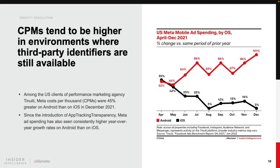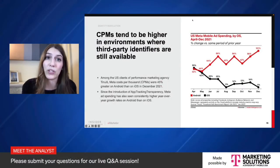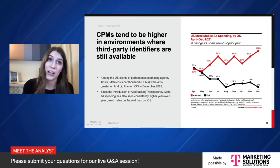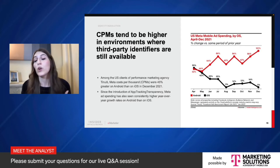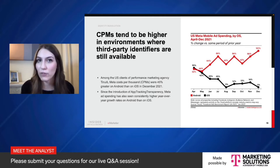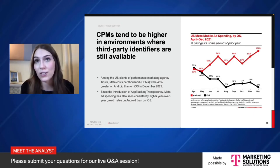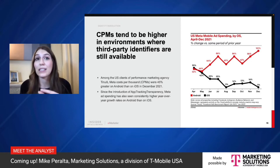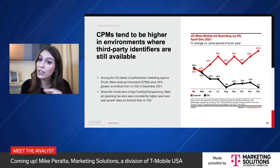Since the introduction of App Tracking Transparency, Meta ad spending has seen consistently higher year-over-year growth rates on Android than on iOS. From Meta's Q4 earnings, the company anticipates losing about $10 billion in ad revenue as a direct result of App Tracking Transparency changes. Now Google's following suit — it's phasing out cross-app tracking, albeit with more warning than Apple gave and with public commitments to collaborate closely with advertisers and app developers. Without cross-app tracking capabilities on Android, we may start to see the gap in costs between Android and iOS devices start to close.